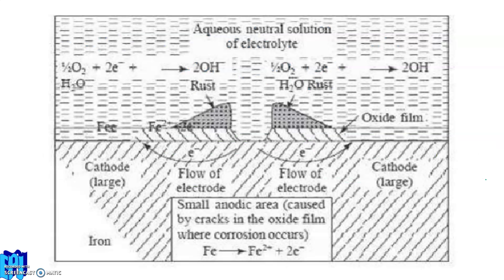Let us discuss the figure. In hydrogen evolution corrosion, the anodic area is large and the cathodic area is small. But in oxygen absorption corrosion, the main difference is that the cathodic area is large. You can see that here the cathodic area is large and the anodic area is small.